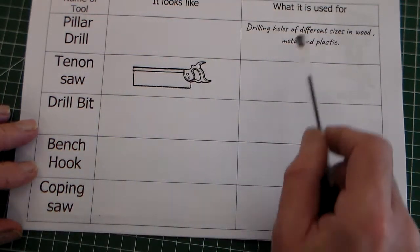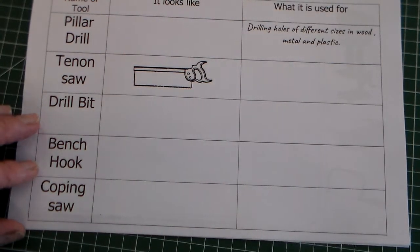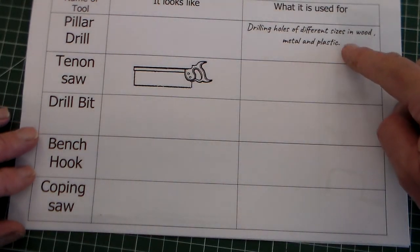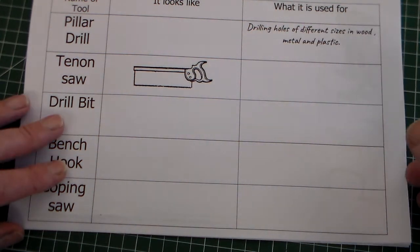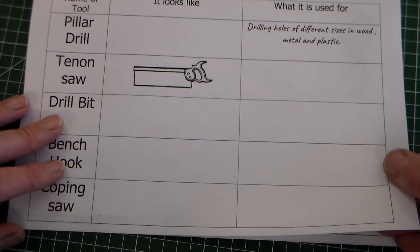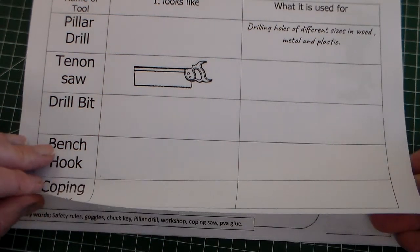Down here we need the images and here we need the explanations. When writing in design and technology please write in sentences with capital letters and punctuation. So that is homework 1, tools for the Maze Game.